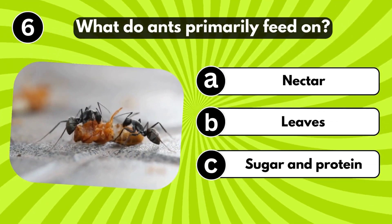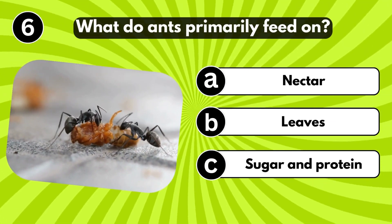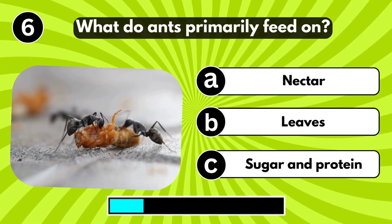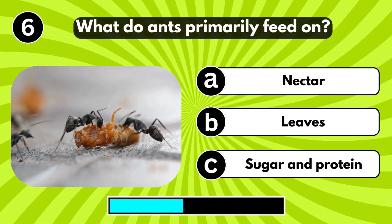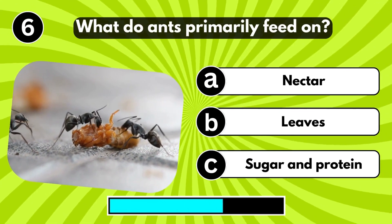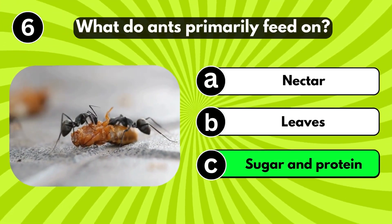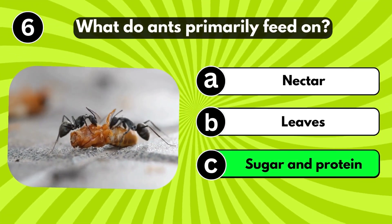What do ants primarily feed on? Sugar and protein.